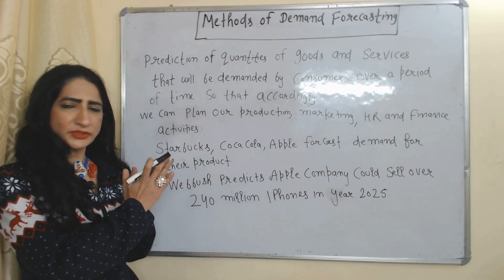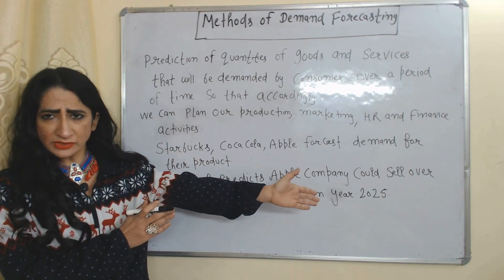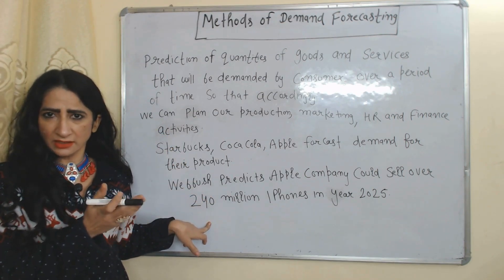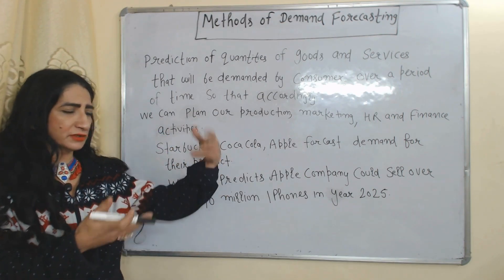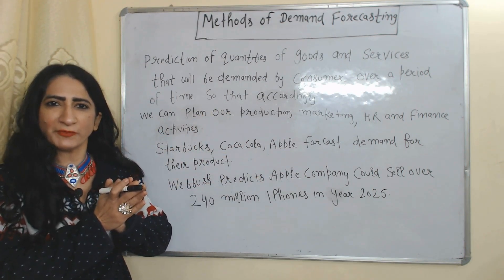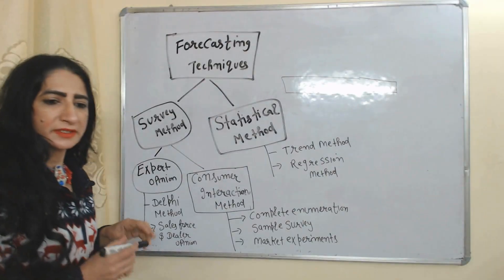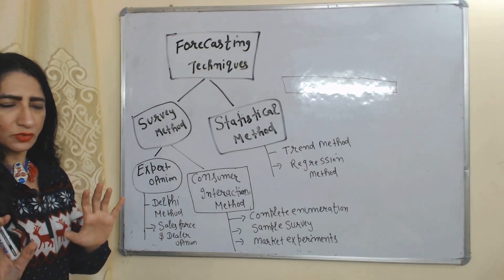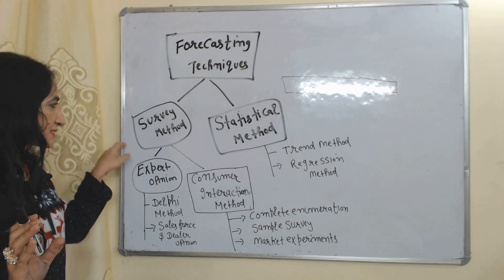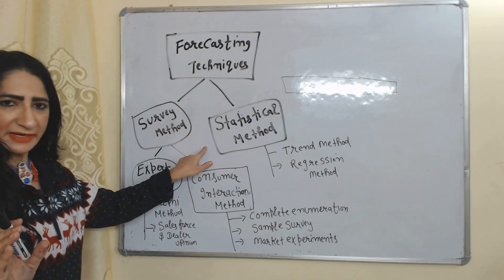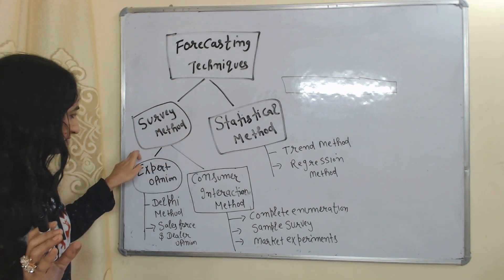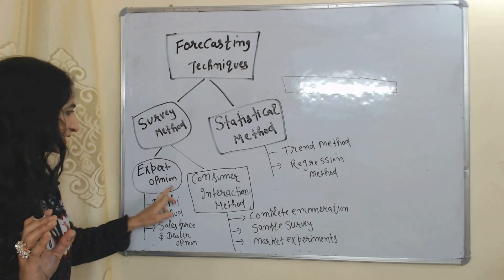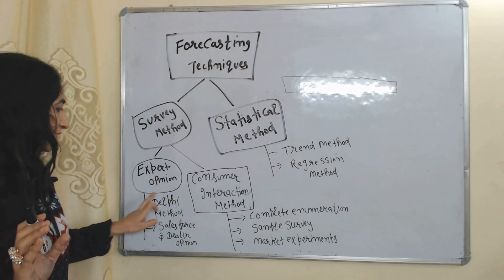According to Wedbush's prediction, Apple could sell over 240 million iPhones in 2025. Demand forecasting techniques are mainly divided into two parts: survey method and statistical method. Survey method is further divided into two parts: expert opinion and consumer interaction method.